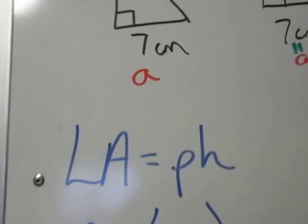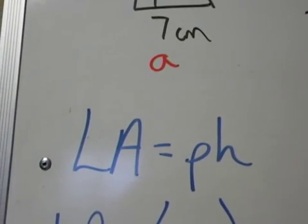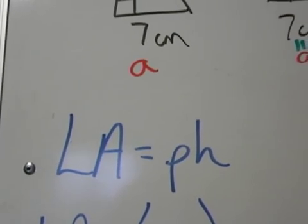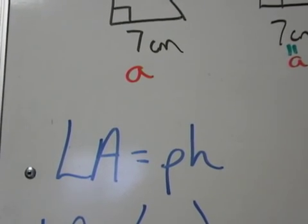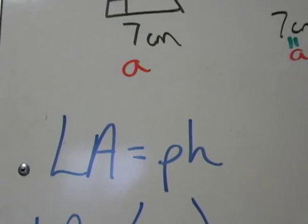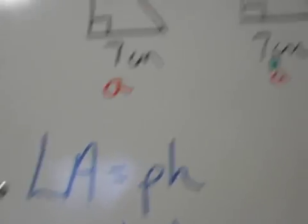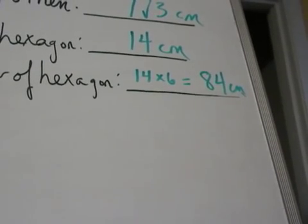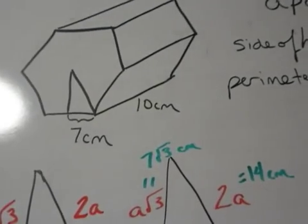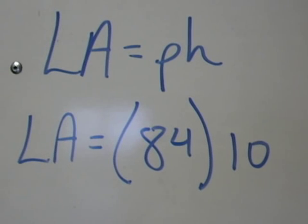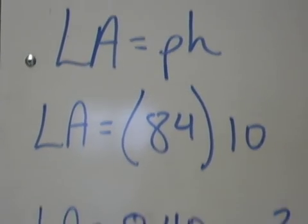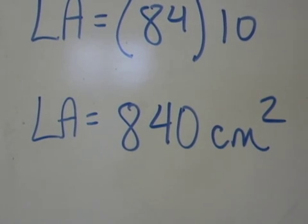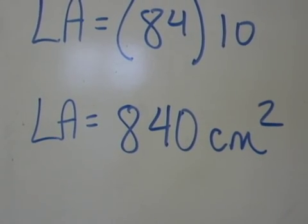Well, lateral area is a nice simple formula. Perimeter times height. Perimeter meaning the perimeter of the hexagon, and height meaning the height of the overall prism. We already figured out the perimeter as 84 centimeters, and the height was given as 10 centimeters. Let's plug that in. That means that the lateral area is equal to 84 multiplied by 10, or the lateral area is 840 centimeters squared.